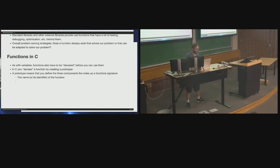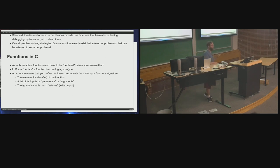The second thing you provide is a list of its inputs or parameters — you'll see the terms parameters and arguments used interchangeably; I'll generally call them parameters. The third thing is the type of variable that it returns — that is, its output. Those are the three things that go into a prototype or function signature: what it takes as input, the name of the function, and the type of output it returns.